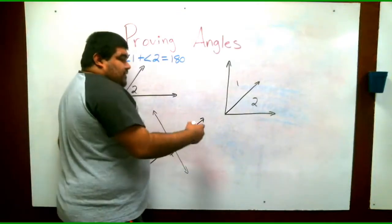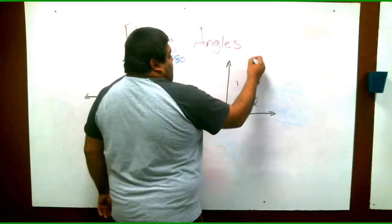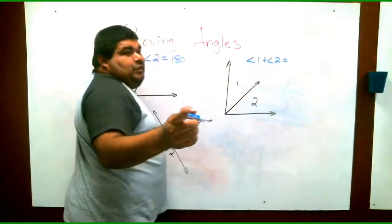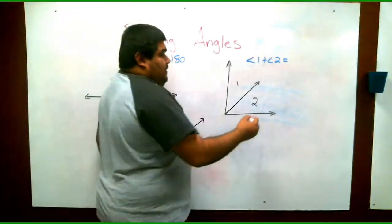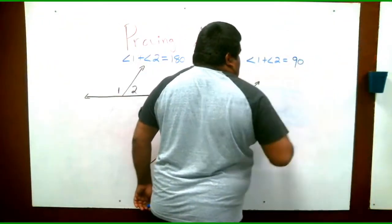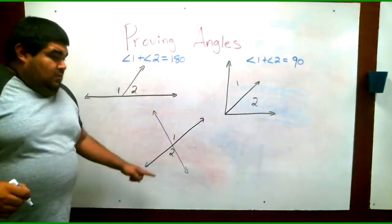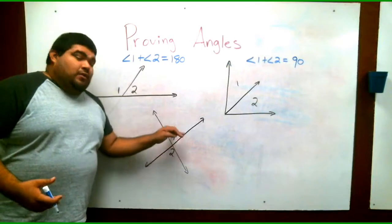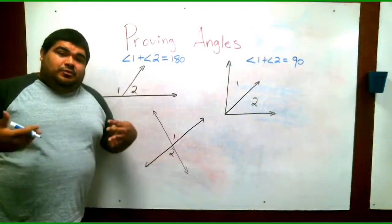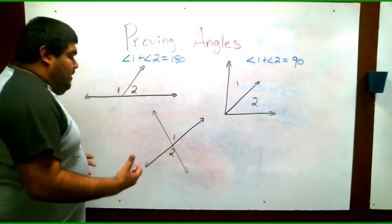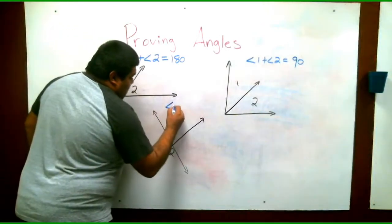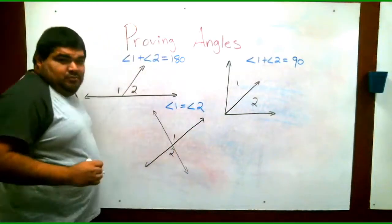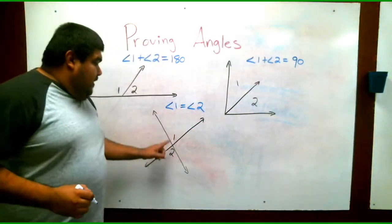But this one makes a supplementary angle. So we have angle one plus angle two equals 180. You guys remember, this is just the review, the very basic stuff of it. Again, angle one plus angle two equals, you guys remember, 90 degrees for complementary.